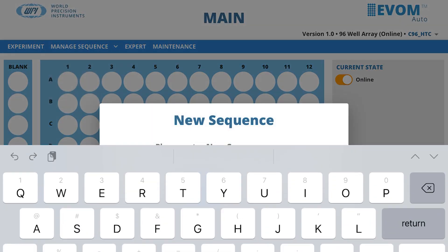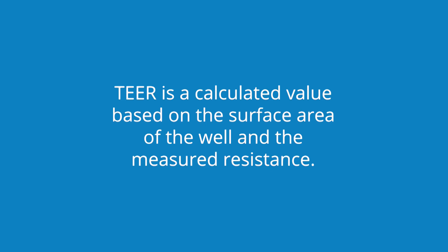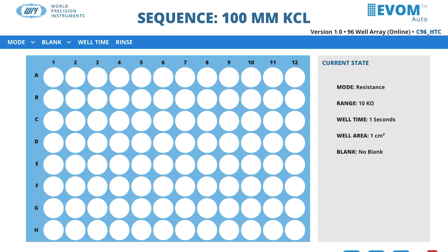You may choose to display the measured resistance values or the tier measurement. Tier is a calculated value based on the surface area of the well and the measured resistance. Select the Mode menu. Options include Resistance and Tier.